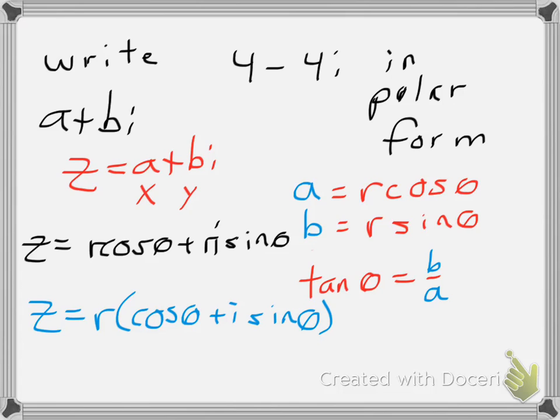Now, in this case, 4 minus 4i. Let me move to a new page with some more space. So 4 minus 4i, I can identify 4 is a, negative 4 is b.